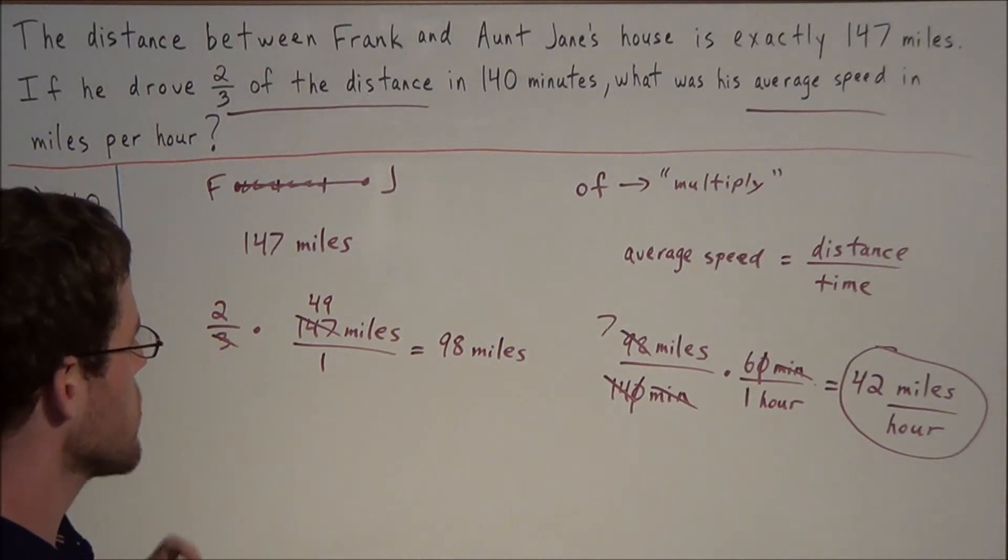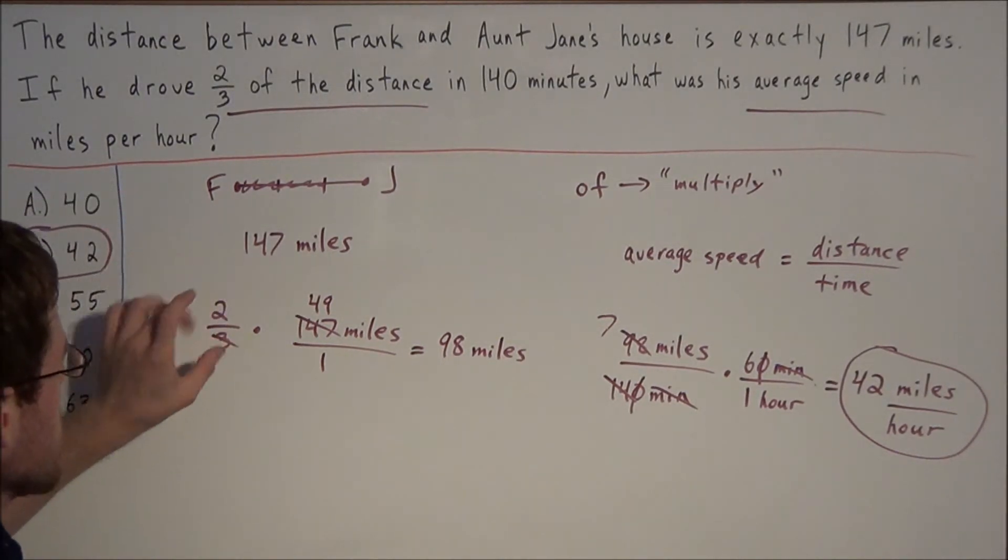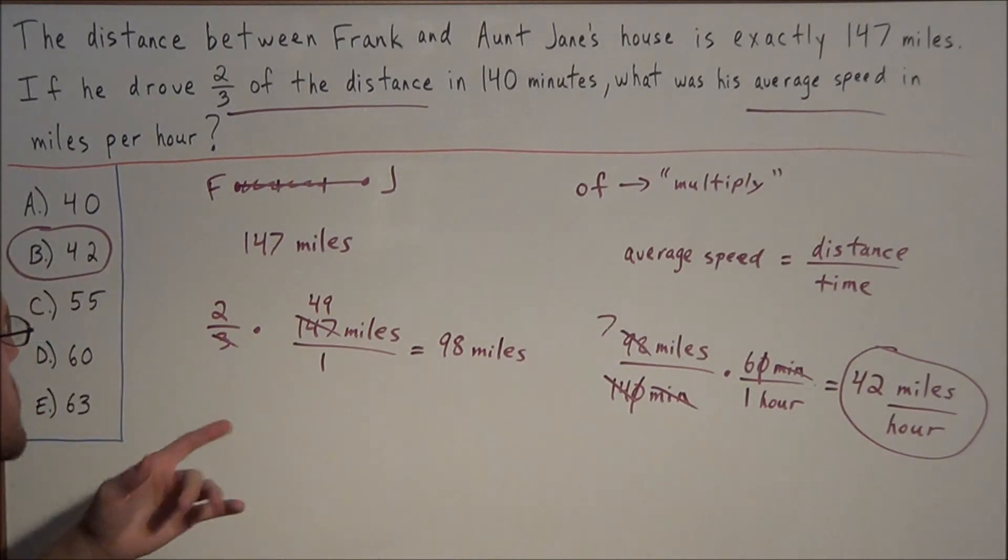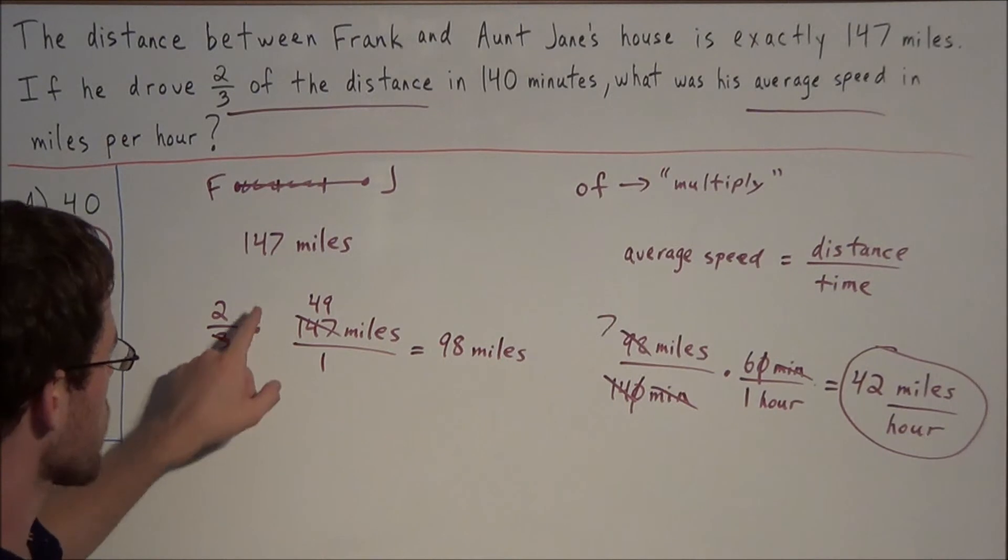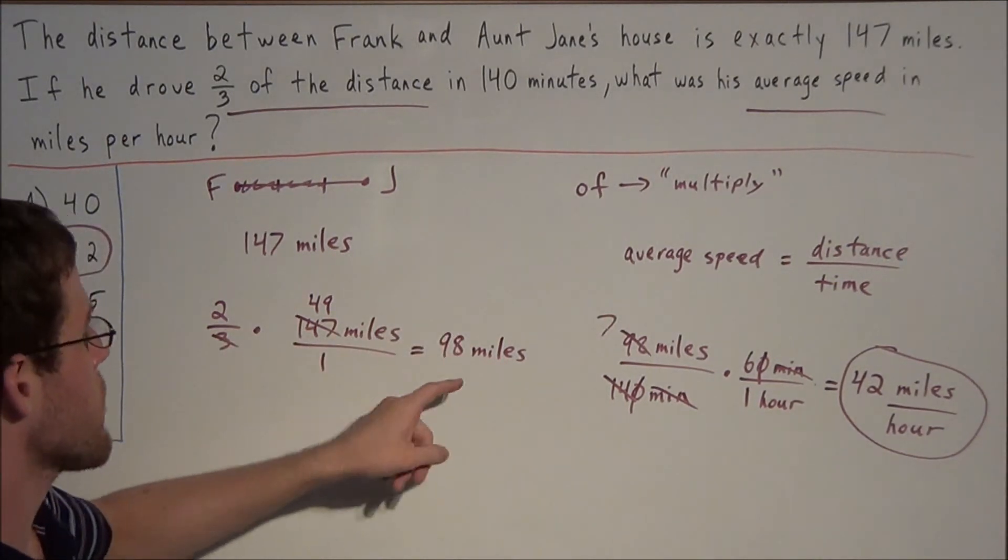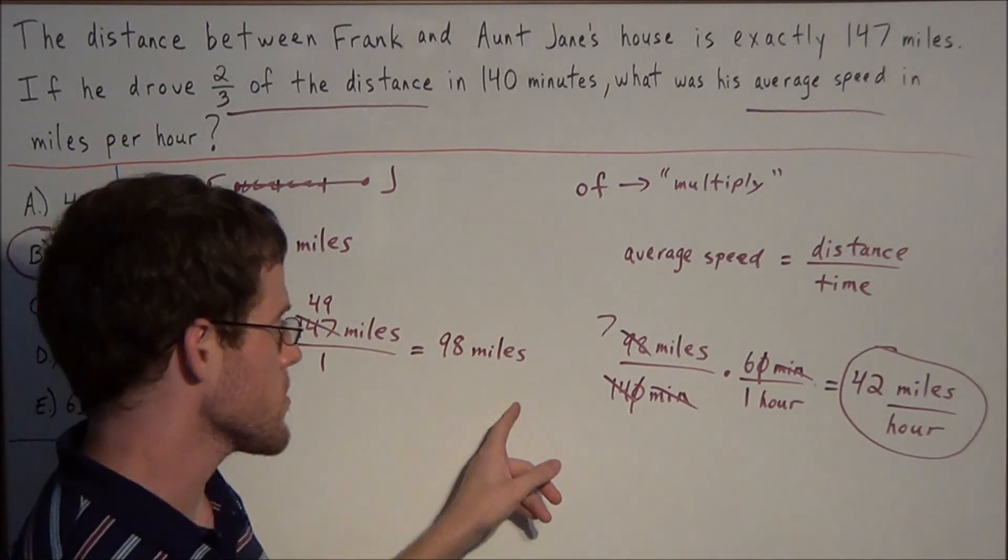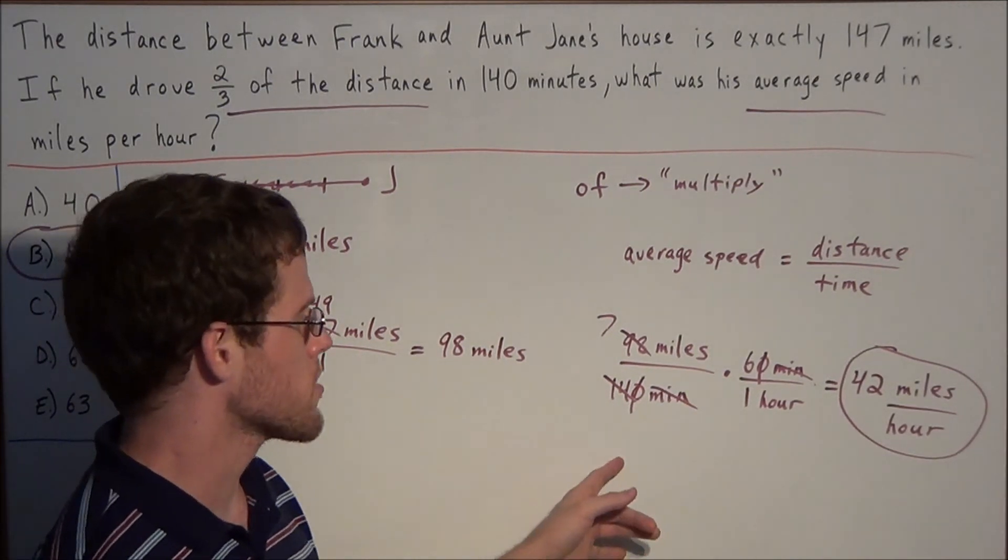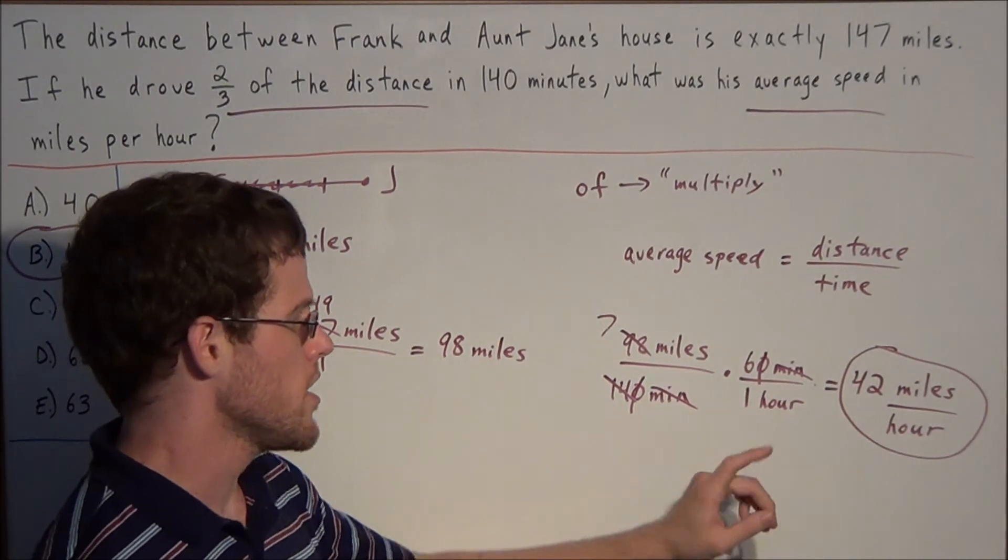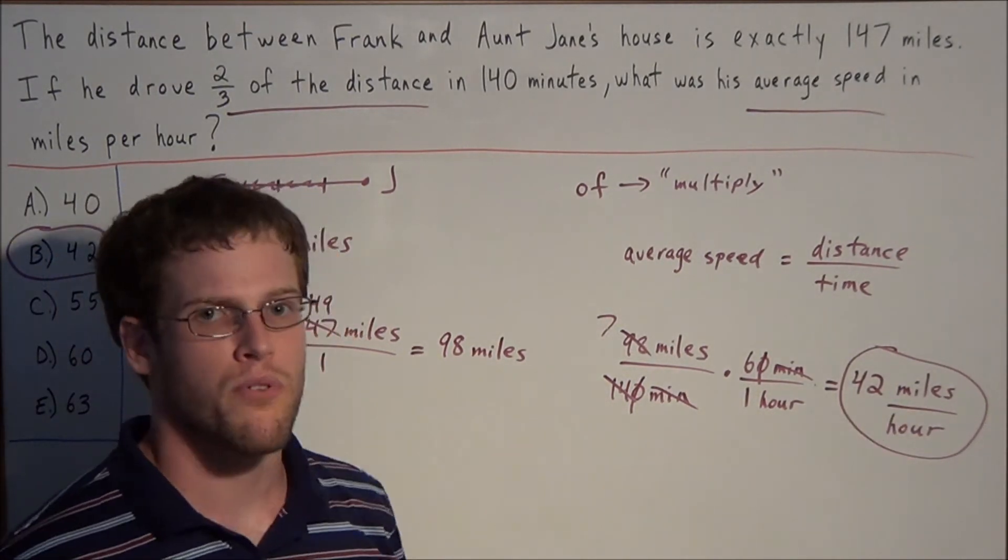To recap, we used the concept of finding fractions of a number. We found two-thirds of 147, which is 98 miles, then divided by 140 minutes. But we needed miles per hour, so we multiplied by 60 minutes over 1 hour and arrived at 42 miles per hour.